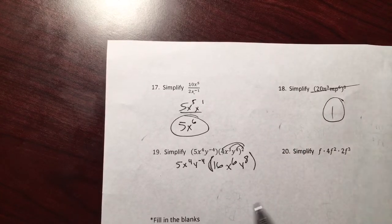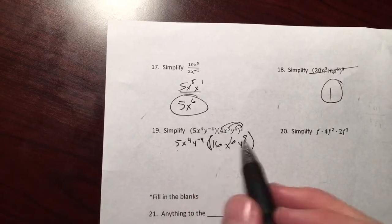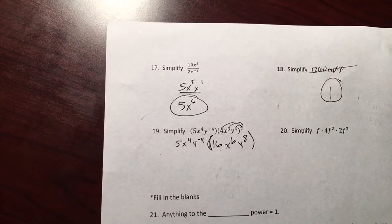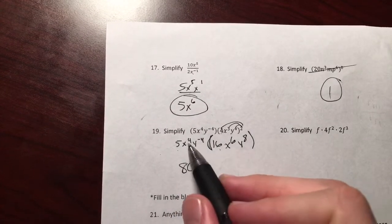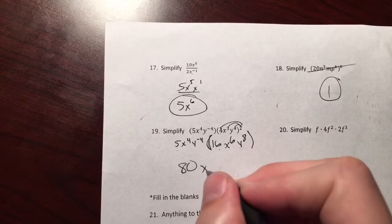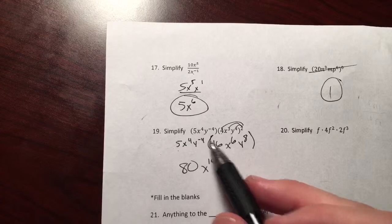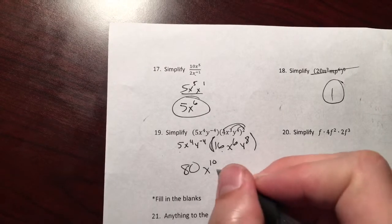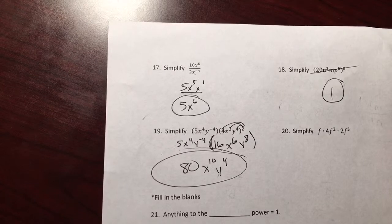The only thing left to do now is multiply these coefficients and add up your same base exponents. 5 times 16 makes 80. For your x's, you have 4 and 6 making 10. For the y's, you have negative 4 and positive 8, which makes positive 4. You're done there. Moving on.